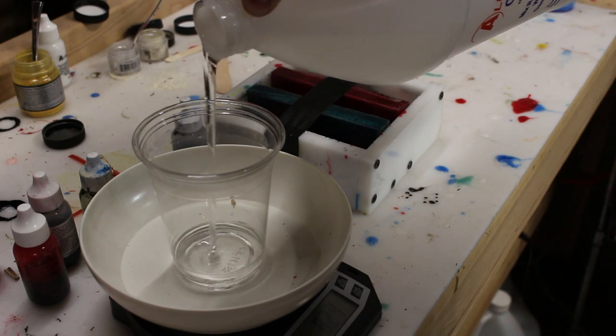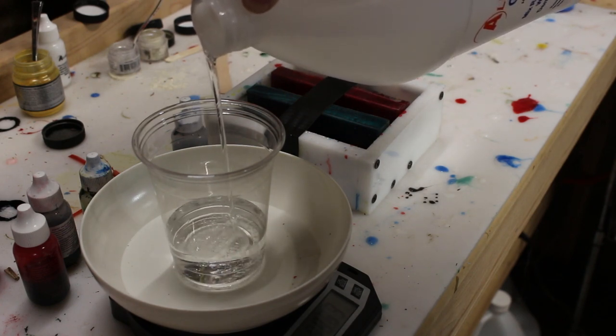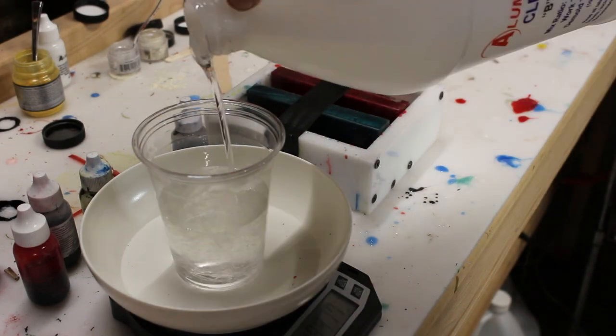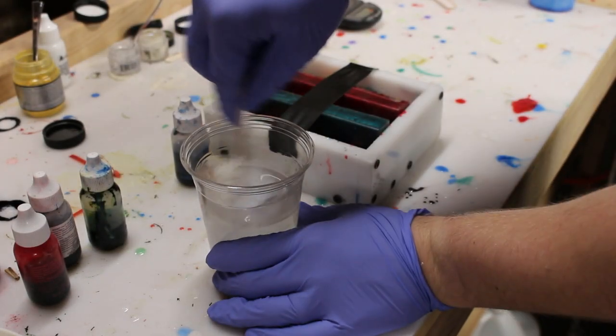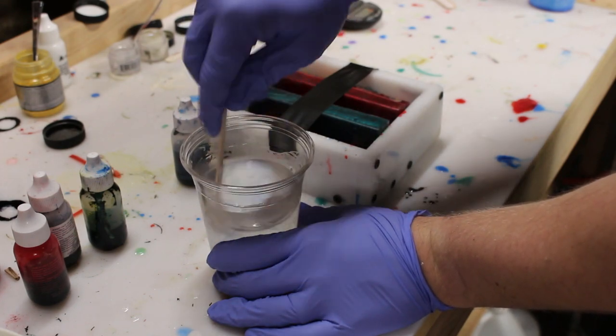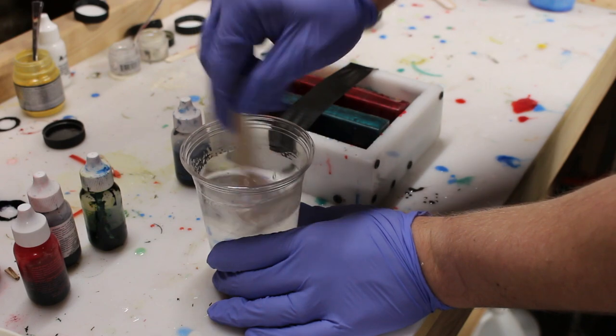The resin I'm using is Alumalite. For anybody who's not familiar with the resin, it is a part A and part B resin that is mixed by weight. That's what I'm doing right now—it's mixed exactly one-by-one by weight.